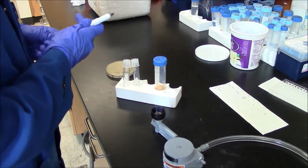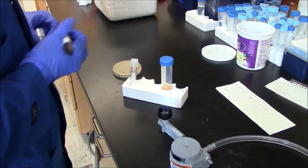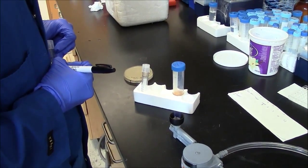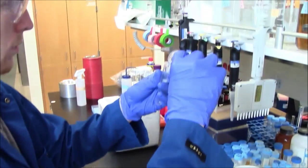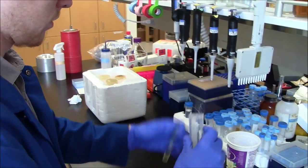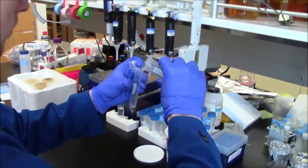After labeling these smaller tubes, Josh will pour a little bit of the culture media into each of the smaller tubes. About 2 milliliters is what he's shooting for, and you can see he has very skillful hands.